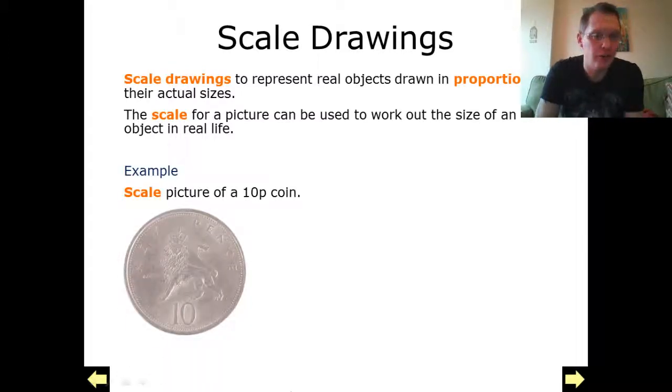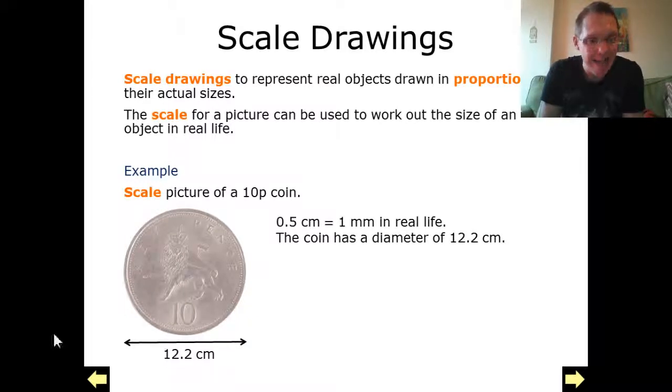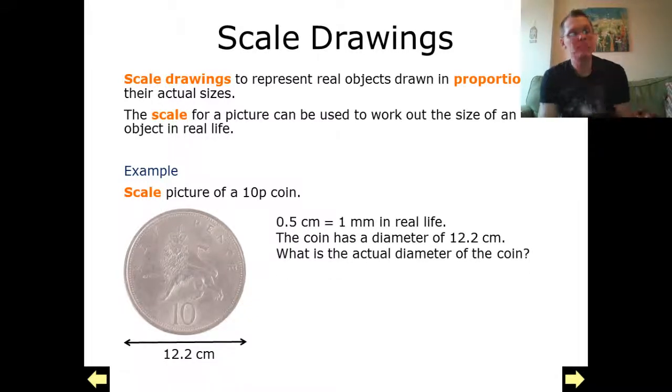Scale picture of a 10p coin, here's my 10p coin just here. 0.5 cm equals 1 mm in real life. This coin has a diameter of 12.2 cm. Now our problem is, what is the diameter, using this scale drawing, of an actual coin?